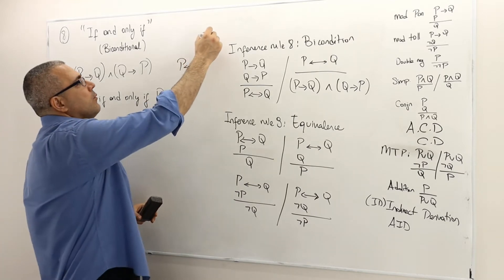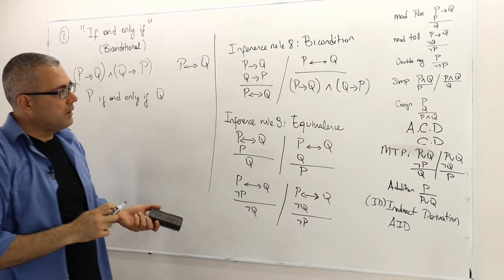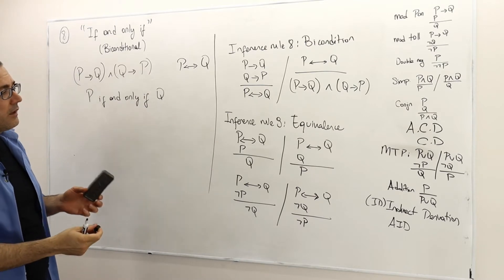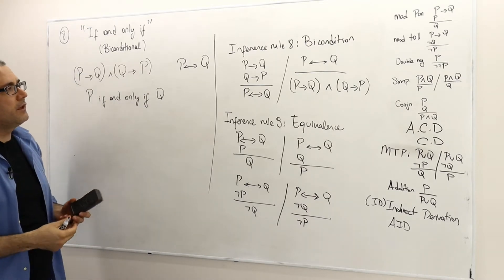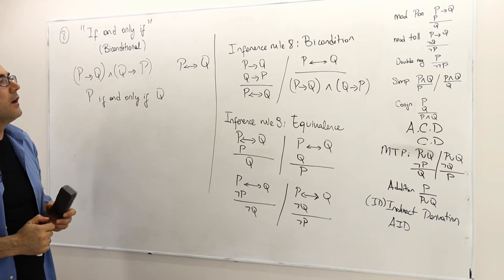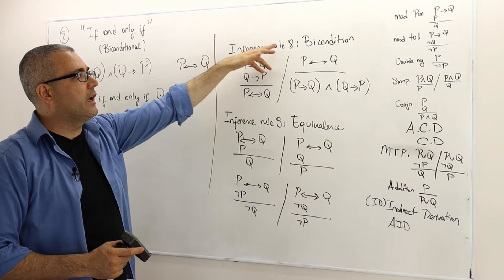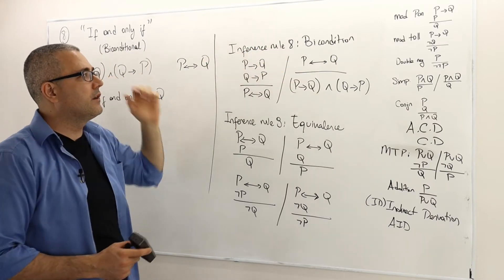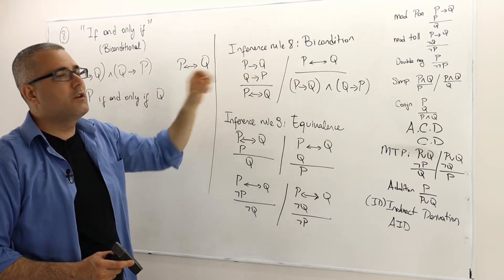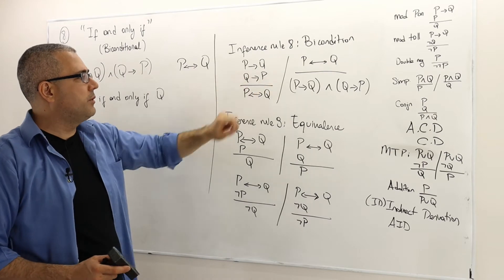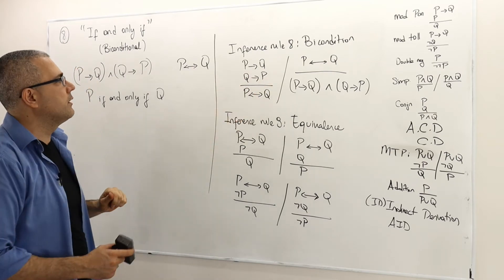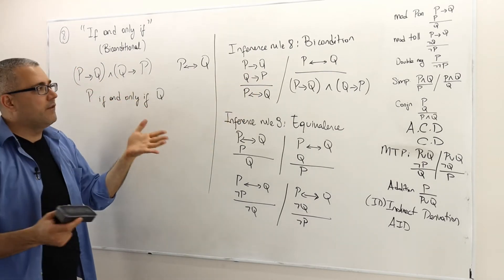So what are the inference rules? The inference rules kind of come from the definition of if and only if statement. So whenever I have inference rule eight, it's also called biconditional. So if p implies q is true, if q implies p is true, therefore p if and only if q is true. This is just by definition.